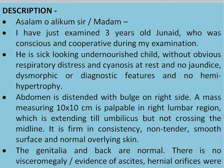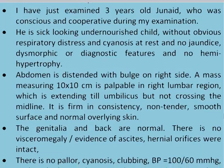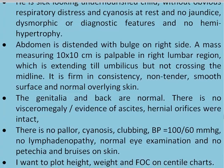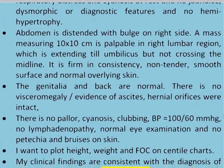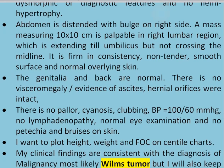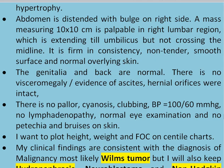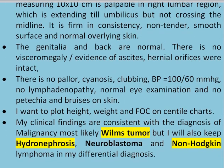It is firm in consistency, non-tender, smooth surface, and normal overlying skin. The genitalia and back are normal. There is no visceromegaly or evidence of ascites. All orifices were intact. There is no pallor, cyanosis, or clubbing. Blood pressure is 100/60 mmHg. No lymphadenopathy, normal eye examination, and no petechiae or bruises on the skin. I want to plot height, weight, and FOC on centile charts. My clinical findings are consistent with a diagnosis of malignancy, most likely Wilms tumour.